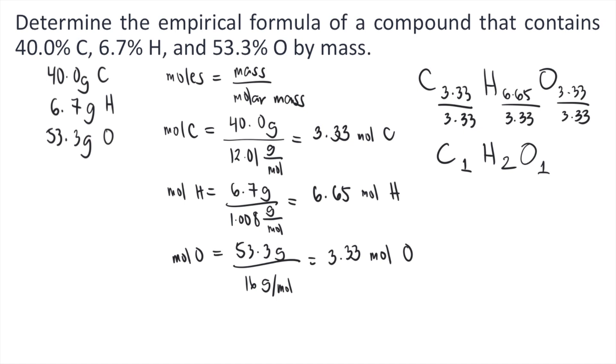But we know that when you write chemical formula and the subscript is 1, we omit 1. So if we rewrite this, the empirical formula is CH2O. And this is the answer to the question.